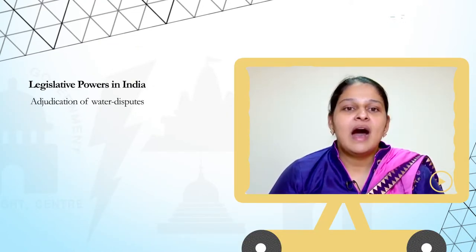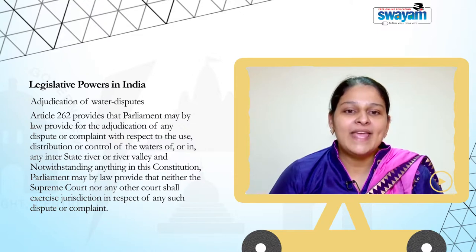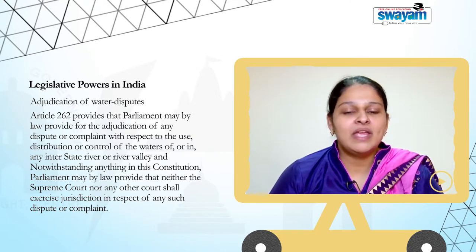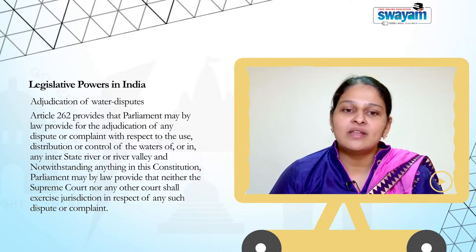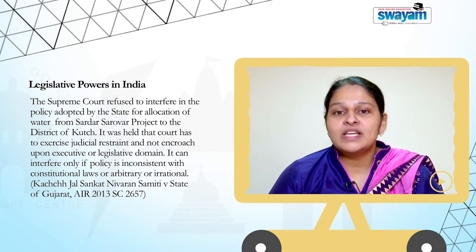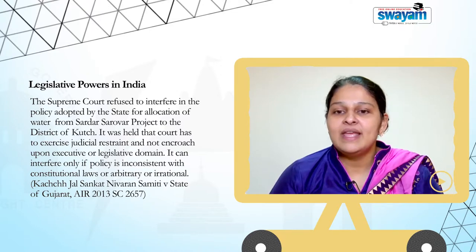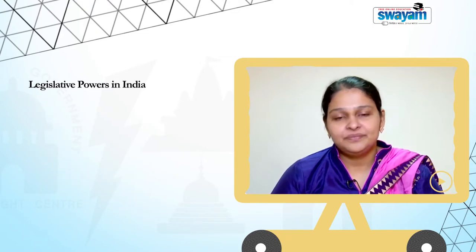Thirdly, adjudication of water disputes. Article 262 provides that Parliament may by law provide for the adjudication of any dispute relating to the use, distribution or control of the waters of or in any interstate river or river valley. And notwithstanding anything in the Constitution, Parliament may by law provide that neither the Supreme Court nor any other court shall exercise jurisdiction in respect of any such dispute or complaint. The Supreme Court refused to interfere in the policy adopted by the state for allocation of water from the Sardar Sarovar project to the district of Kutch, as held in Kutch Jalsankat Nivaran Samithi v. State of Gujarat.